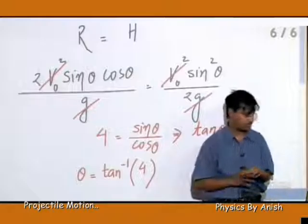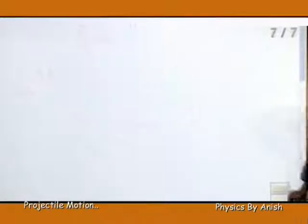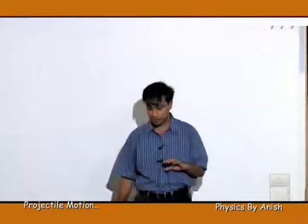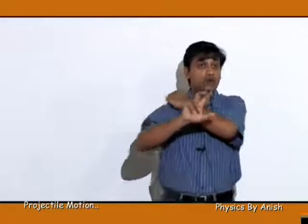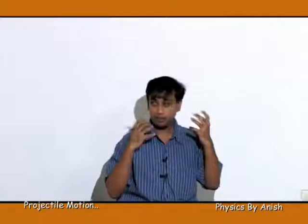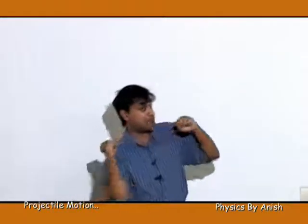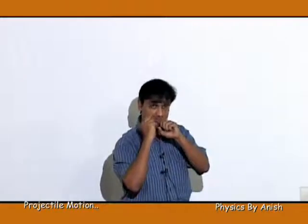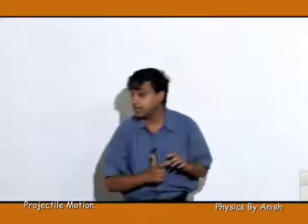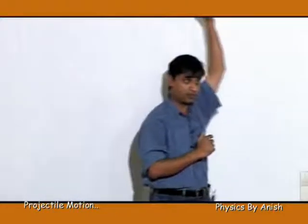This is the angle of projection. New question: a person can throw a ball vertically up to height H. If with the same speed he throws the ball at an angle, then what can be the maximum distance up to which the ball can be thrown? Note: throwing vertically is not projectile motion — it is simply vertical motion.